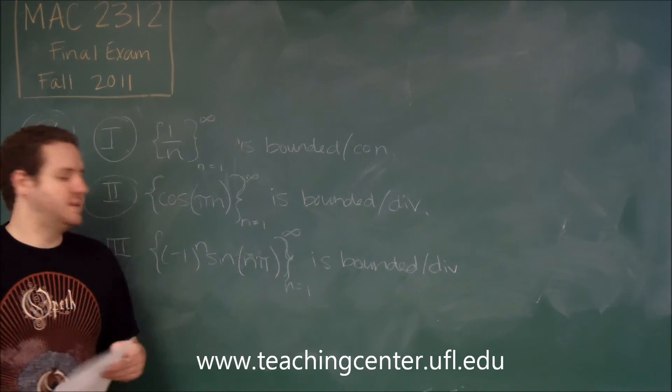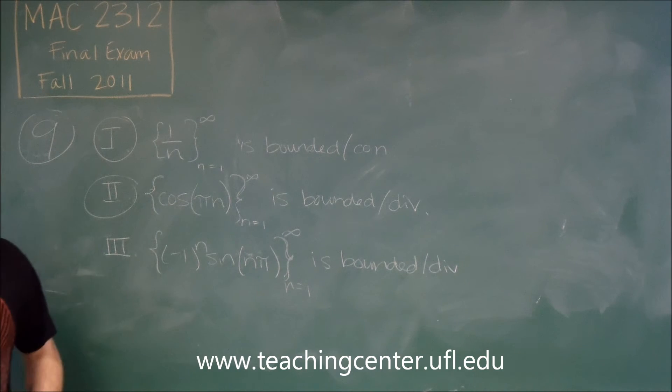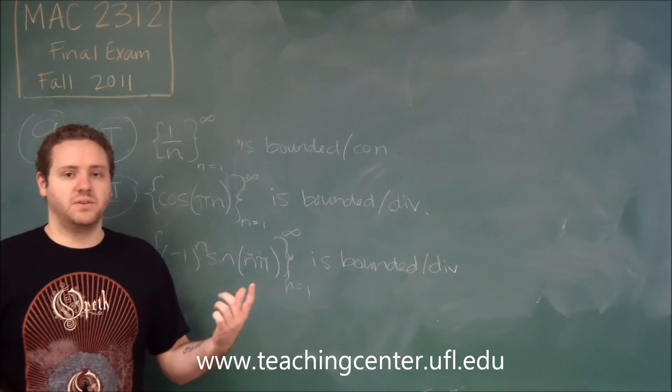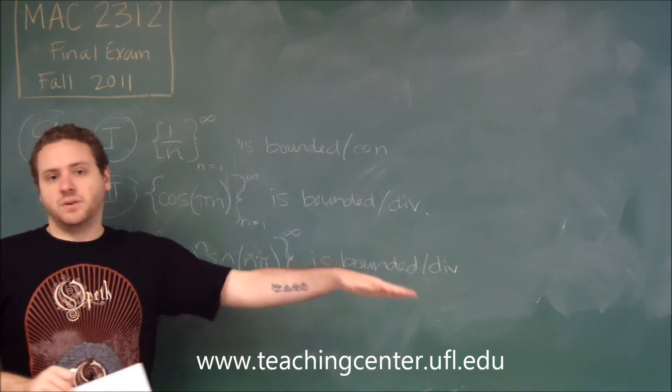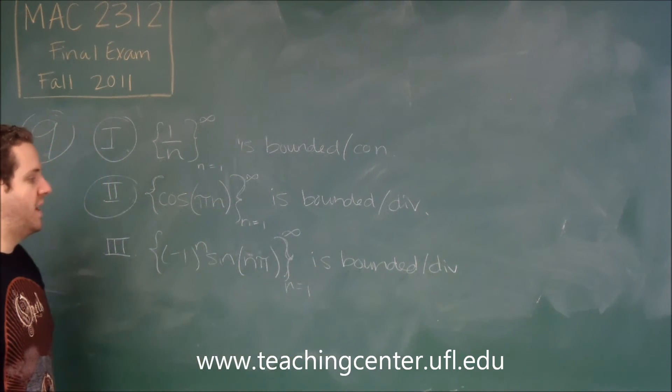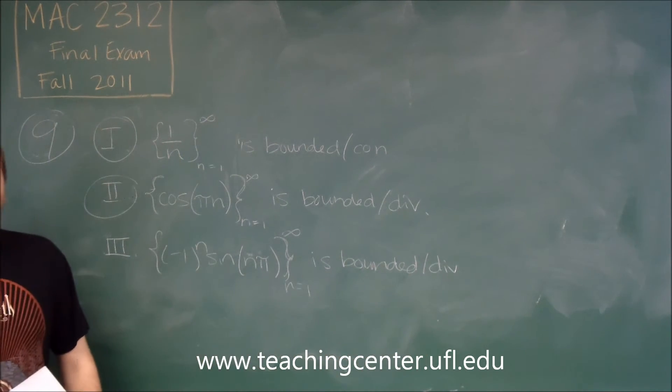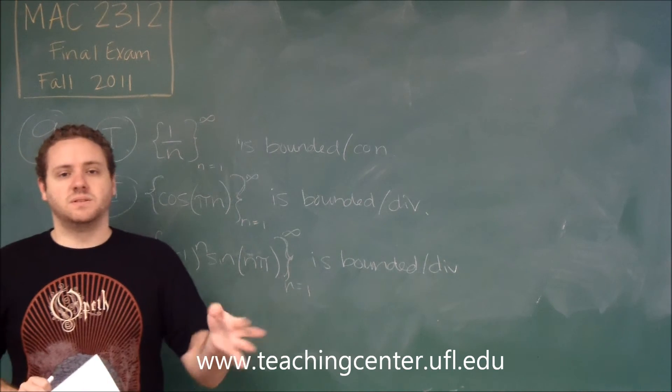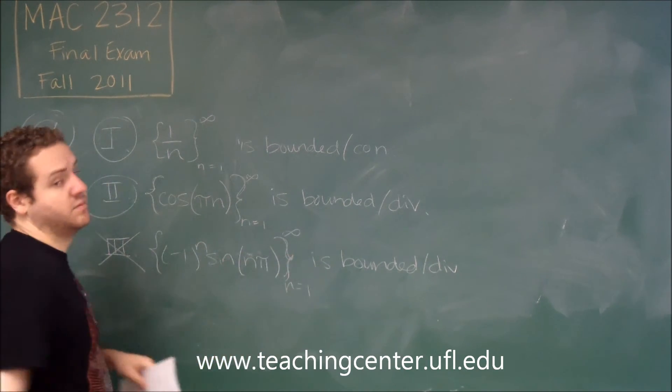So, what you should recognize here is that sine of n pi is always zero. Any integer multiple of pi, when you use the sine of that, you're going to get zero. So, this sequence is just zeros all the way through. Then, is it bounded? Clearly, yes. Is it divergent? No, because this converges to zero. If every term in the sequence is zero, then it converges to zero. So, this is incorrect. This is convergent.